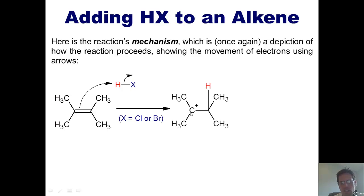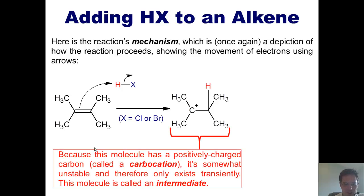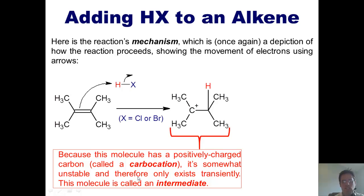The carbon on the left, because it just lost those two electrons it was formerly sharing, now has a positive charge — that is called a carbocation. Note: it is pronounced 'carbocation,' not 'carbocation.' This compound is very unstable and only exists transiently during the reaction. This type of molecule is called an intermediate.